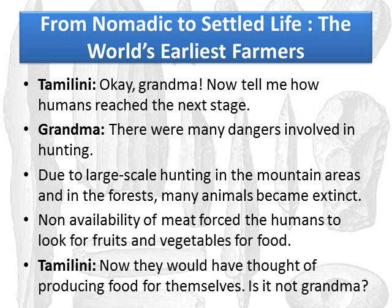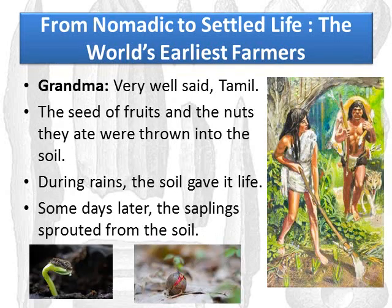Tamilini says: 'No, they would have thought of producing food for themselves, is it not grandma?' As hunting progressed, the animals they hunted became extinct and they looked for fruits and vegetables. Once they understood they could eat fruits and vegetables, they would have thought of producing food for themselves. Grandma says: 'Very well said, Tamilini, that is absolutely right. The seeds of fruits and nuts they ate were thrown into the soil. During rains, the soil gave it life and some days later saplings sprouted.'